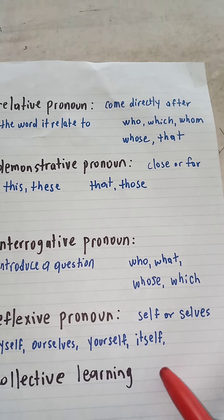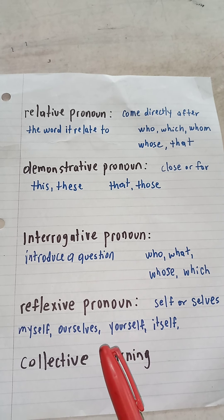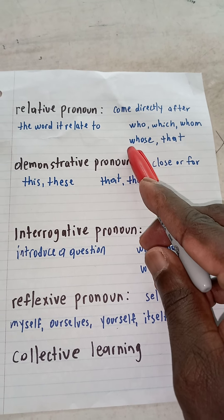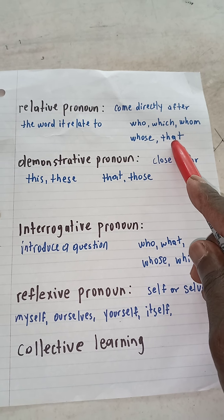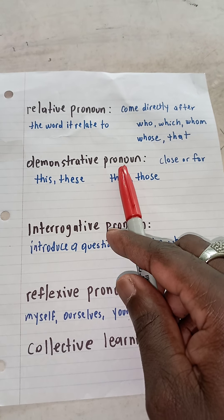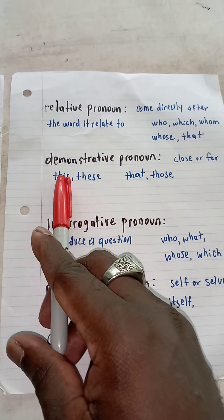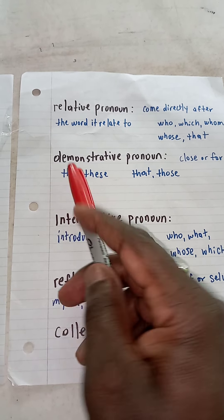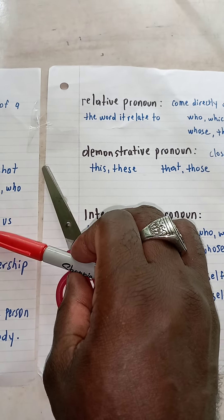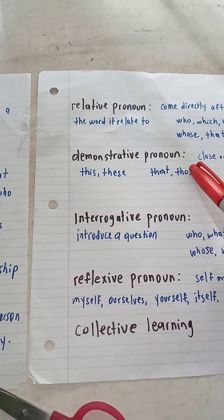You also have relative pronouns, which come directly after the word they relate to. Those are like which, whom, whose, and that. Then there are demonstrative pronouns — they show whether something is close or far. This and these refer to things that are close.